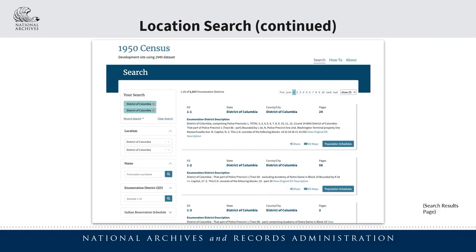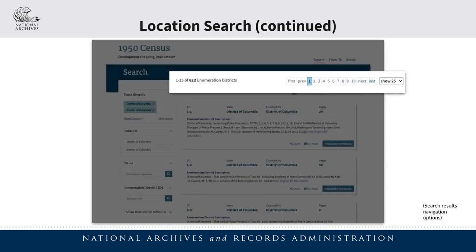Here we see the search results page, which will appear after you have selected one or more of the filters to perform a search for census records. In this example search for census records from the District of Columbia, we can see a number of results that were found, which are organized in rows. We can also see information listed above those results, including the number of results that were found, the number of pages that those results span across, and options to adjust the number of results listed per page.